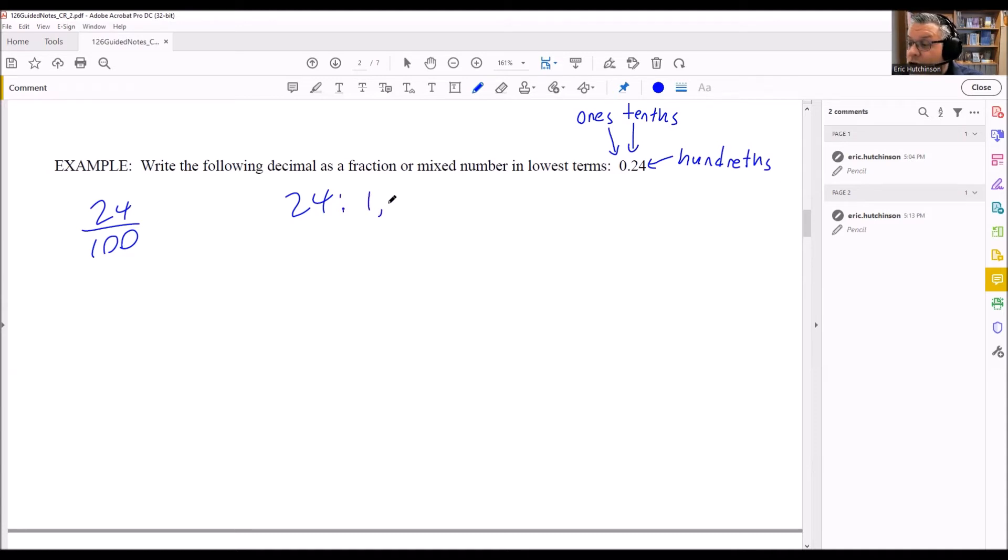So for 24, we have 1 goes in there evenly, 2, 3, we have 4, 6 goes in there evenly, 8, 12, and 24.